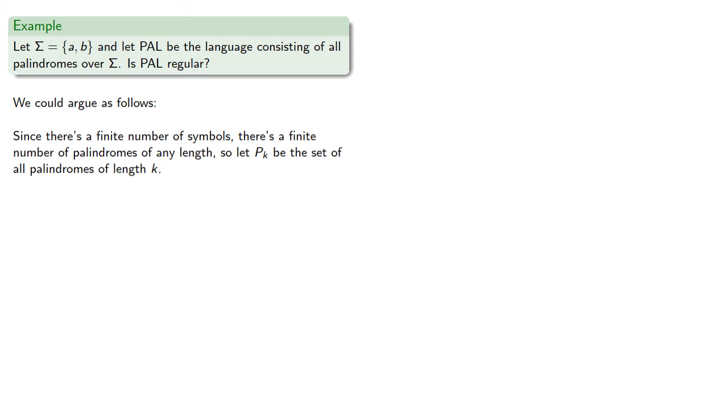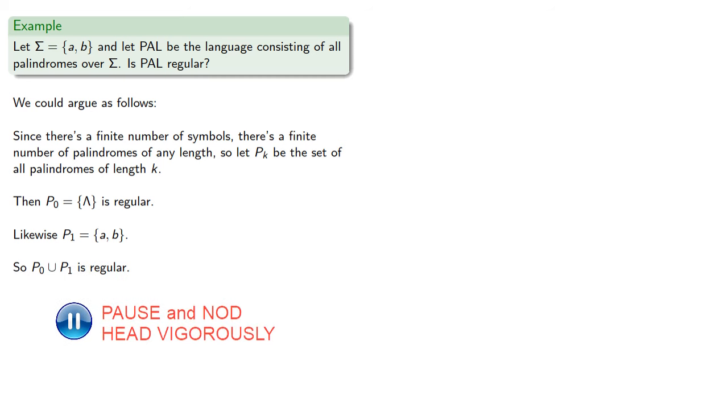Then p0, that's the symbols of length 0 that are palindromes, well that's just our empty string, that's regular. And p1 just consists of these singletons, and so p0 union p1 is regular. p2, the palindromes of length 2, well those are regular, and so our union is regular.